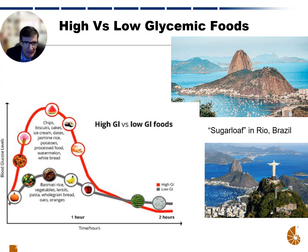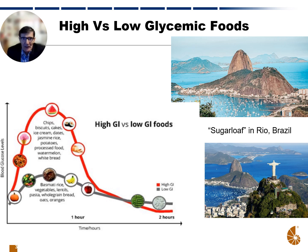Below that, the gray curve represents low glycemic foods: basmati rice, vegetables, lentils, pasta, whole grain bread, oats, oranges. So if we want to reduce the spike in glucose levels in our body, we want to eat those foods that limit the spike, like that gray curve at the bottom. In reference here, I've put the contrast of Rio de Janeiro in Brazil — there's that tall pointed mountain called Sugarloaf, which is kind of interesting since we're talking about glycemic foods. That's kind of the visual that compares to what we get with high glycemic food glucose spikes, and in front of that are some lower hills — that's what we're shooting for with lower glycemic foods.